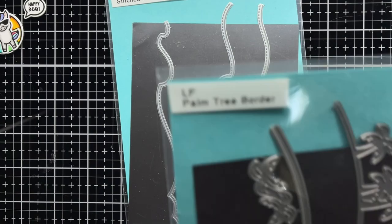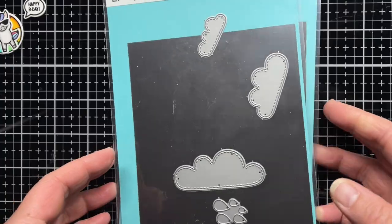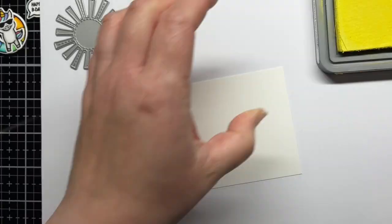I die cut two waves from the stitched wave borders and I'm using the same set of the island with palm trees from palm tree borders, and the sun from spring showers using Distress Heavy Stock cardstock to create my background.